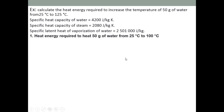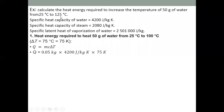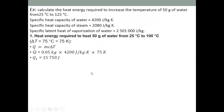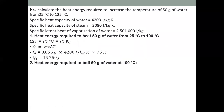First, find heat energy to raise 50 g of water from 25°C to 100°C using q = mc∆T: q₁ = 0.05 kg × 4,200 J/kg·K × 75 K = 15,750 J. The change in temperature is 100 − 25 = 75 K. We stop at 100°C because that's when the state changes.